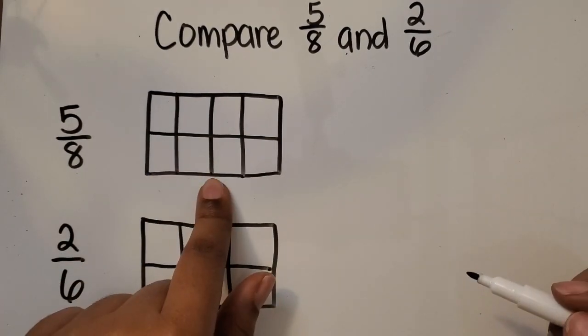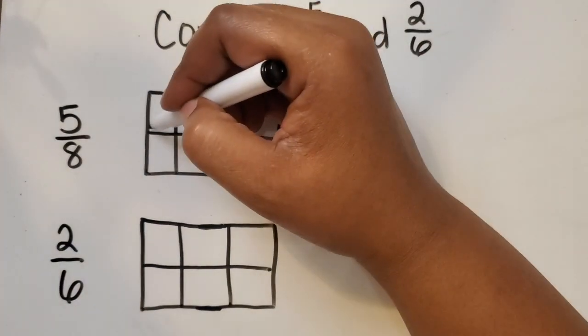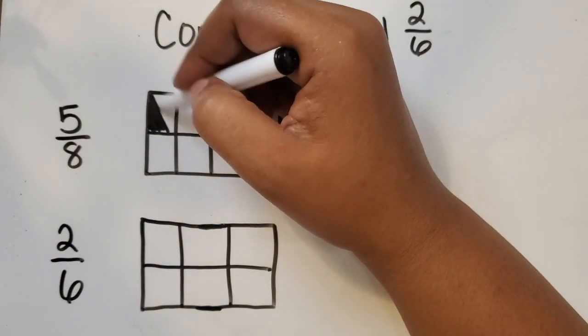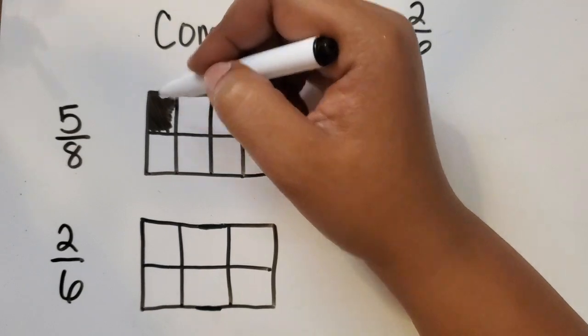Now for the whole representing the 5 eighths, we need to shade in 5 of those equal parts.